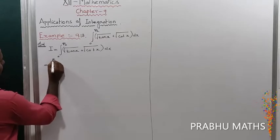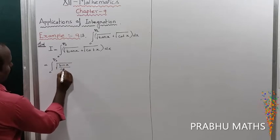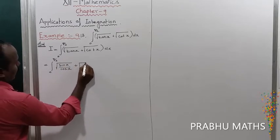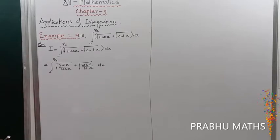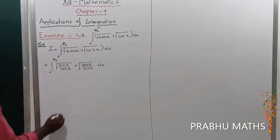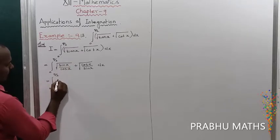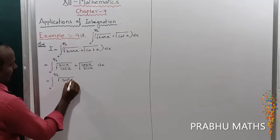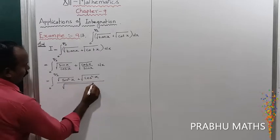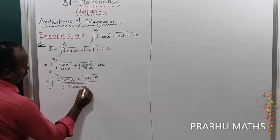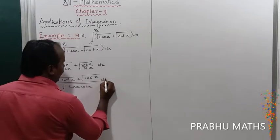We replace tan x by sin x / cos x and cot x by cos x / sin x. So that gives us ∫₀^(π/2) (√(sin x / cos x) + √(cos x / sin x)) dx, which simplifies to ∫₀^(π/2) (√sin²x + √cos²x) / √(sin x cos x) dx.